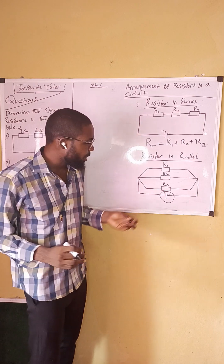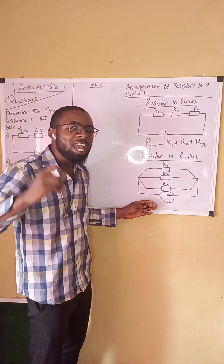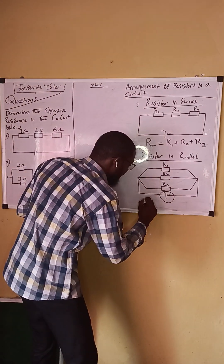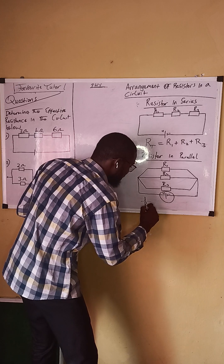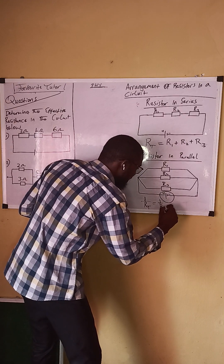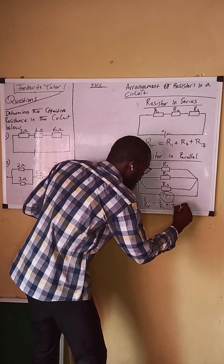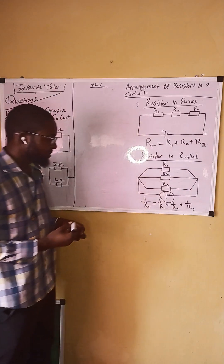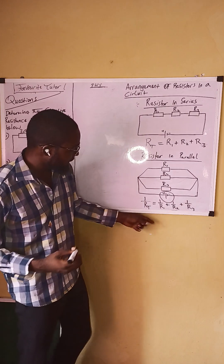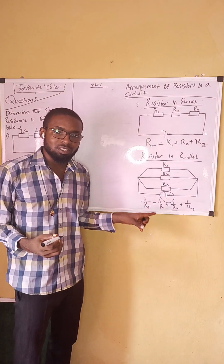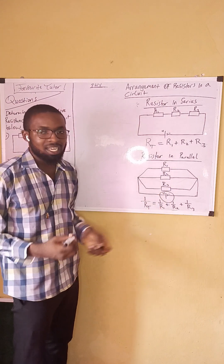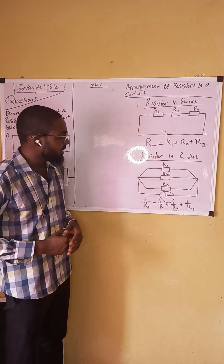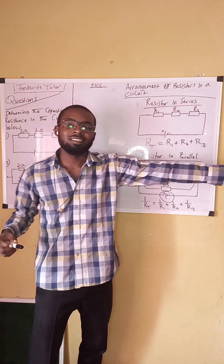For a parallel arrangement, to get the equivalent resistance, the formula is: one over total resistance equals one over R1 plus one over R2 plus one over R3. You take the sum of the inverses of each resistor. In series, you just sum the resistances directly.